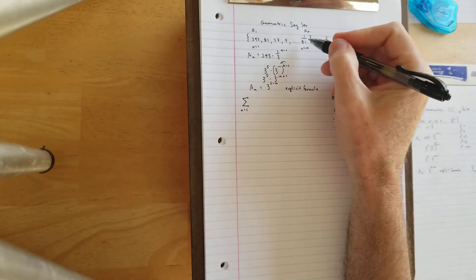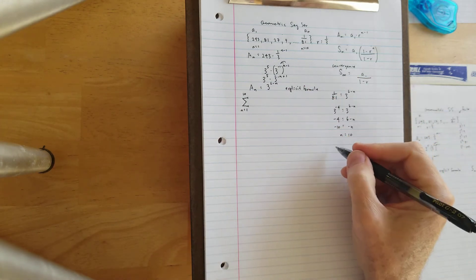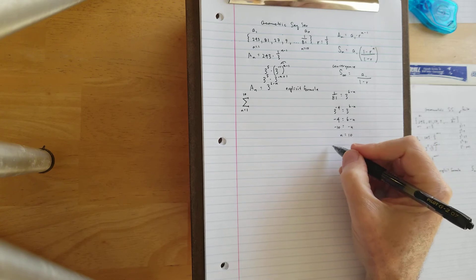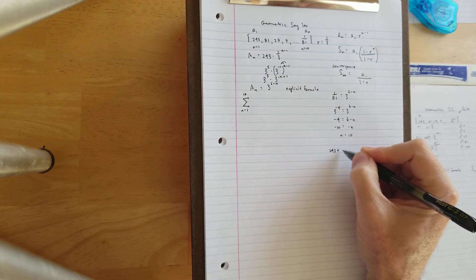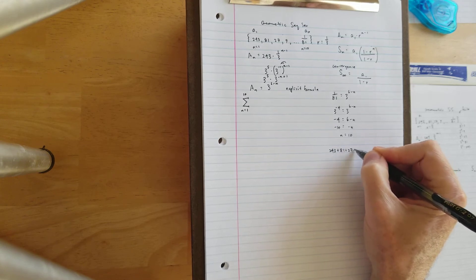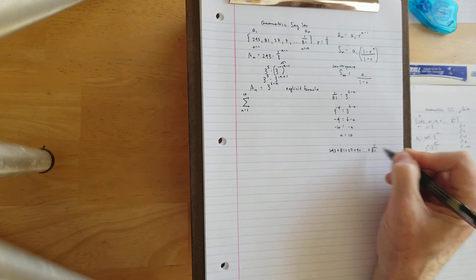And then we know that this is the 10th term of the sequence or series. Let's write this as a series first, so that we know that we're changing things up a little bit. So we're now working with the series 243 plus 81 plus 27 plus 9 plus dot dot dot plus 1 over 81.